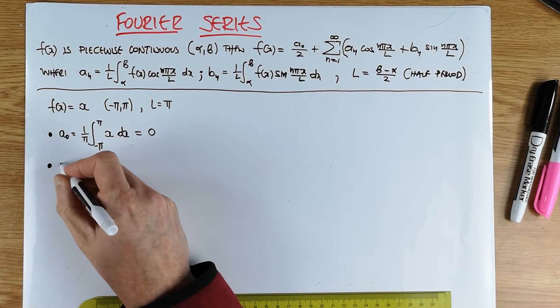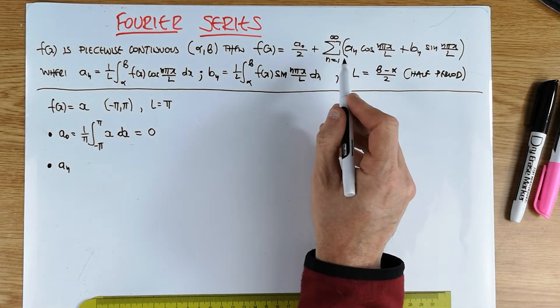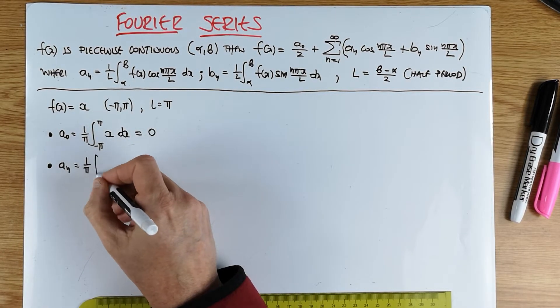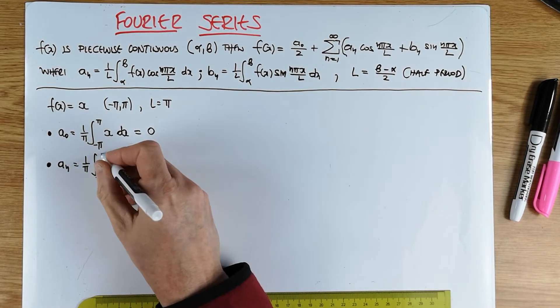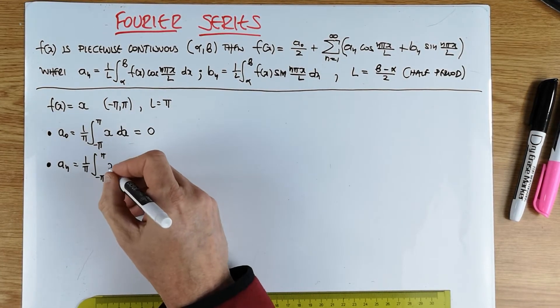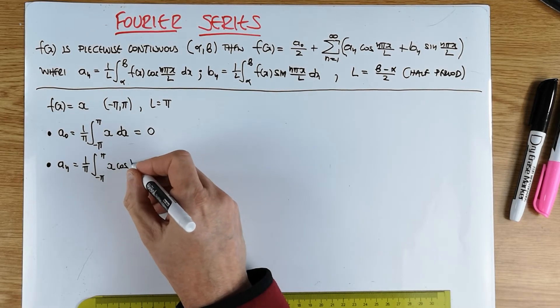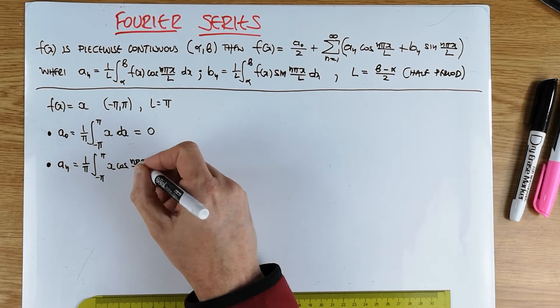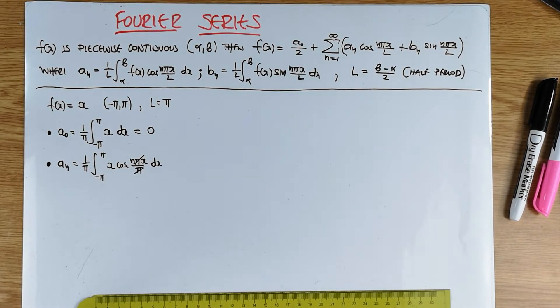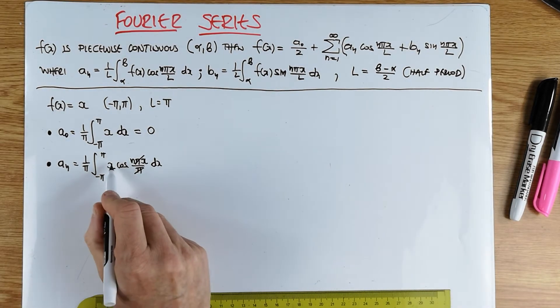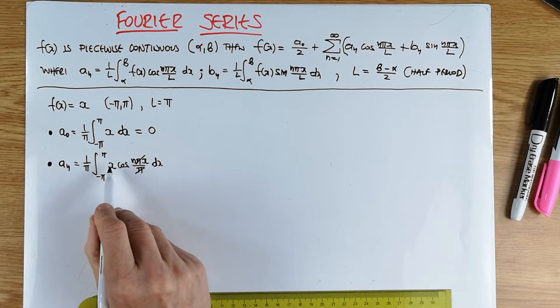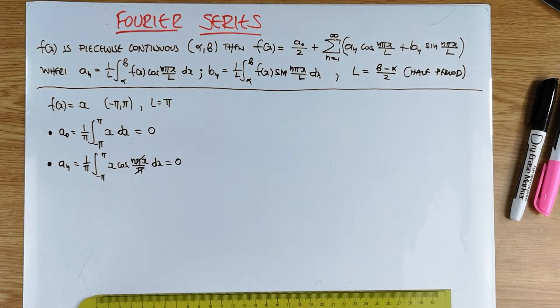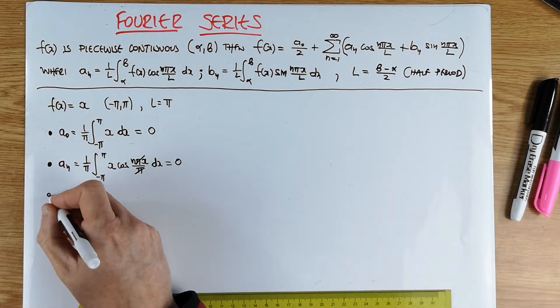The same will be true for all a_n's where n is 1, 2, 3, 4 and so on. Because we look at the general a_n, it's going to be 1 over pi, the integral from minus pi to pi, f of x is x cos n pi x over l, which is in fact pi. So this pi would have cancelled. But there's no integration to be carried out because x is an odd function, cos is an even function. Odd times even is odd in a symmetrical domain. All the a_n's will be in fact 0.